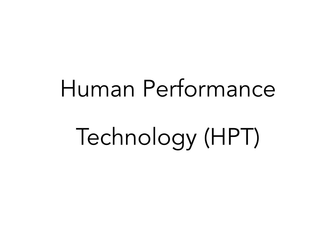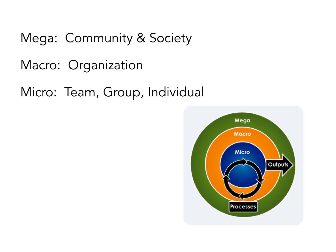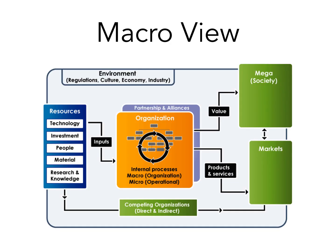Human Performance Technology is a systemic and systematic method to examine workplace performance. HPT looks at individual work within the context of the organization, as well as its environment, in terms of processes and outputs. Organizations can be examined in terms of inputs, value produced, as well as goods and services produced.